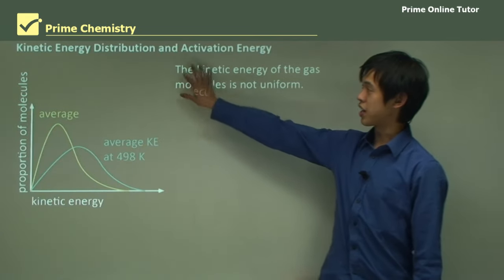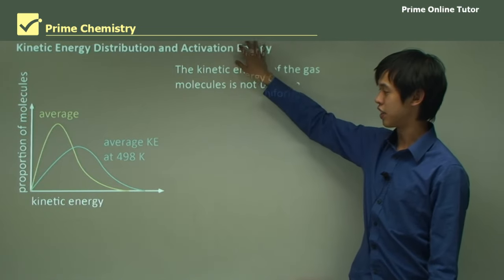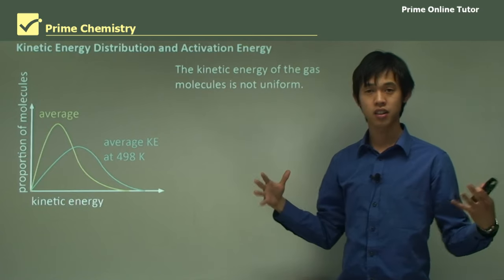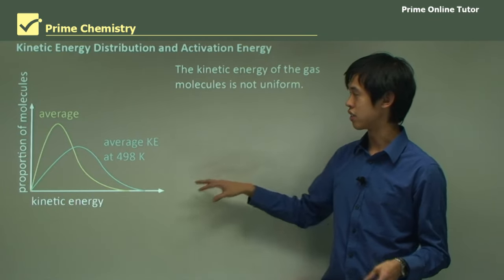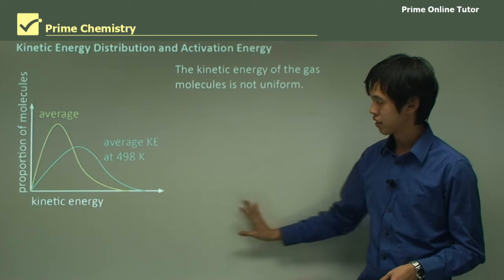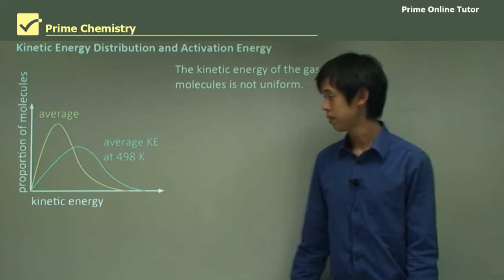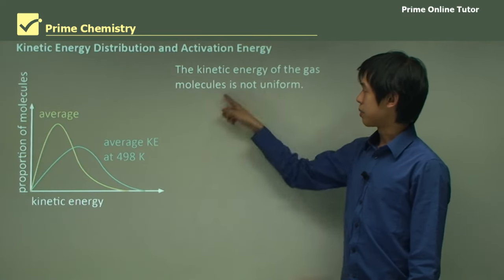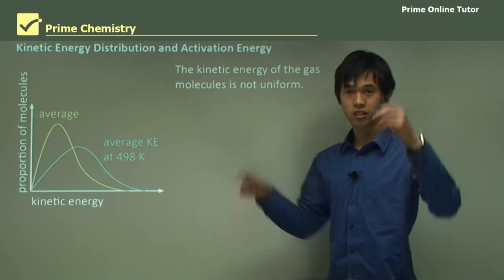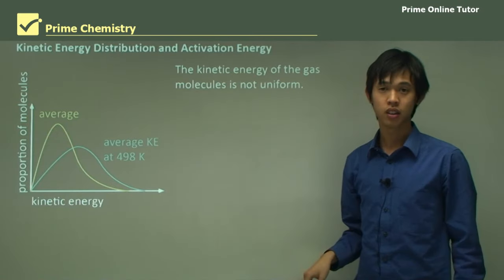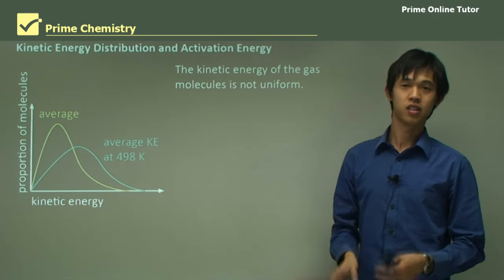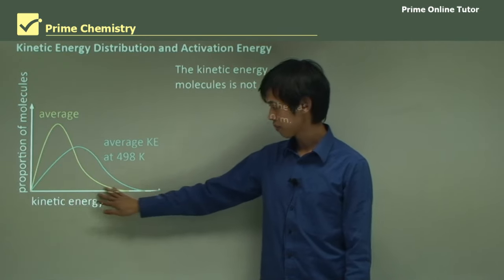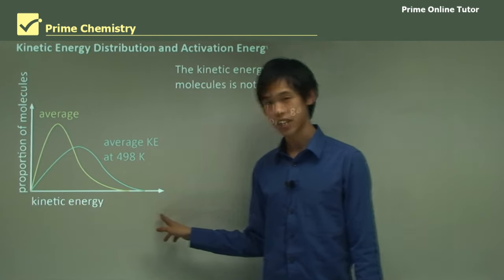Now we're going to talk about the kinetic energy distribution and activation energy. We're going to extend the concept of the energy distribution and see how it relates to activation energy. The kinetic energy of gas molecules is not uniform — in that little box with all the circles, they're all moving at different speeds randomly in all different directions. Here you can see kinetic energy on the x-axis and the number or proportion of molecules on the y-axis.